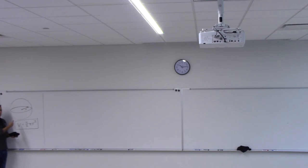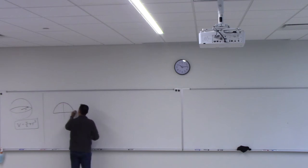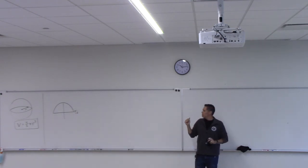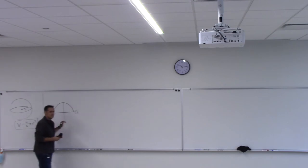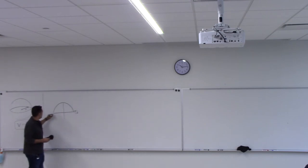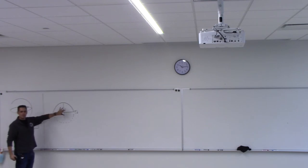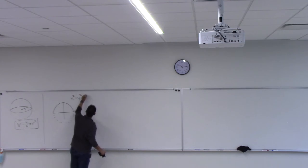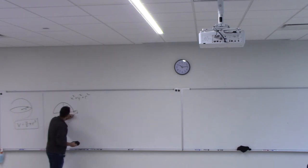Now, let's prove a formula. What is the volume of a sphere? The volume of a sphere of radius r is — we trust this formula. Let's prove it. Let's see where this formula comes from. The way I'm going to do this is to think about how I could create this object from a solid of revolution — what would I need to rotate to get this object?